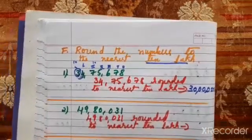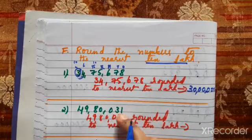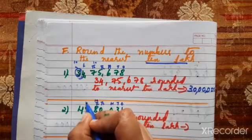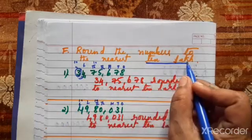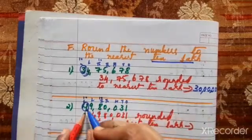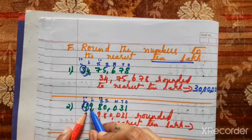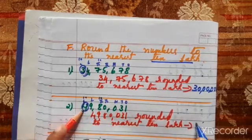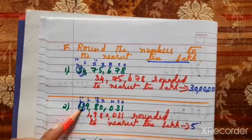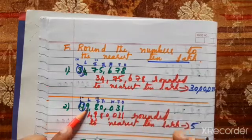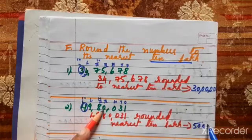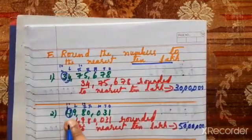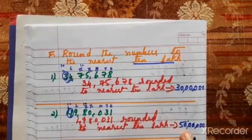Now 2nd question: 49,80,031 we have to round off. First step, check the place value: ones, tens, hundreds, thousands, ten-thousands, lakhs, 10 lakhs — 4 is in the 10 lakhs place. Knock the door: the neighbor is 9, the richest — he can help 4. So 4 becomes 5. Once the door is knocked, 9 is now 0, 8 is 0, 0, 0, and 3 and 1 become 0. So 49,80,031 rounded to nearest 10 lakh is 50 lakhs.